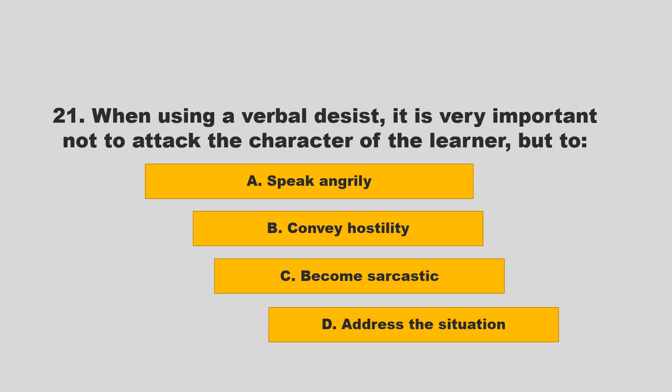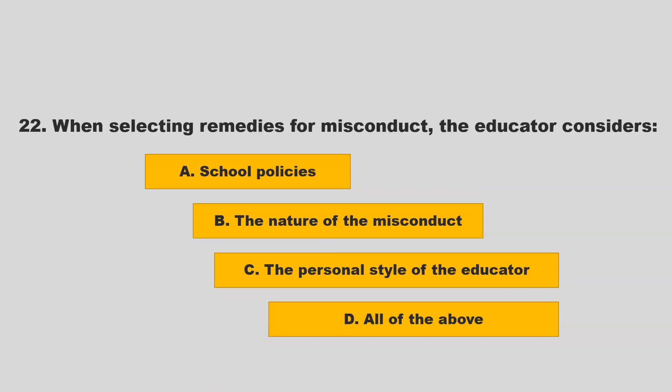When using a verbal desist, it is very important not to attack the character of the learner, but to address the situation. Other options included speaking angrily, conveying hostility, or becoming sarcastic. If you chose D, address the situation, you are correct.